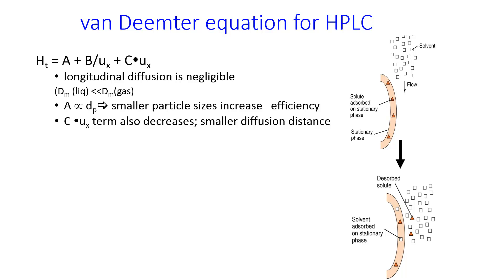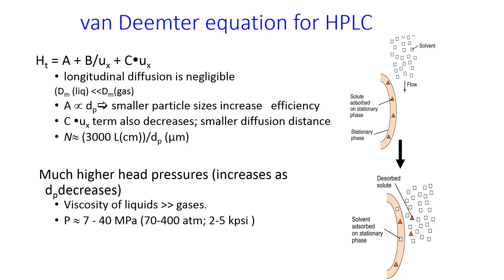For an HPLC column, the number of plates scales with this particle size, the d_p, particle diameter, and with the length of the column roughly as 3,000 times the length in centimeters over the diameter of the particles in micrometers. This is a rough estimation, but it's usually pretty close. Like I said, the pressure increases a lot as the particle size decreases, and so typical pressures for an HPLC are roughly in the range of hundreds of atmospheres. A lot of pressure is required at an optimal flow rate of about one milliliter per minute. You can see this if you plotted out the Van Deemter curve. It would have a minimum of about one milliliter per minute.